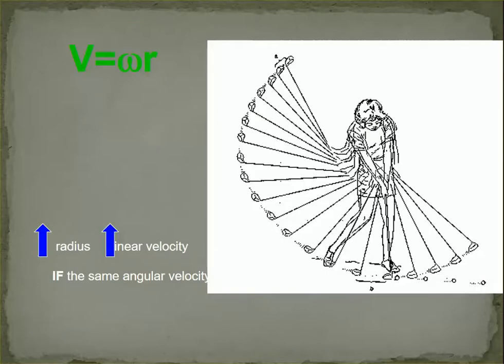And what's an example of this is a golf club. So if you increase the radius of the golf club, you use a wood instead of a putter when you tee off, then you increase radius, you'll increase the linear velocity if you have the same angular velocity.